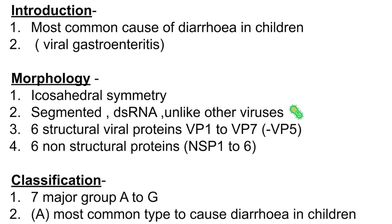Rotavirus also has six non-structural proteins, NSP1 to NSP6. For classification, rotavirus is classified into seven major groups named A to G. Group A is the most common type causing diarrhea in younger children worldwide, while group B causes outbreaks in China.